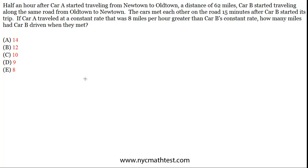Hi, this is Dan Belay, continuing with a series of GMAT quant problems. Half an hour after car A has started traveling from Newtown to Oldtown, a distance of 62 miles, car B started traveling along the same road from Oldtown to Newtown. The cars meet each other on the road 15 minutes after car B started its trip. If car A traveled a constant rate that was 8 miles per hour greater than car B's constant rate, how many miles had car B driven when they met?